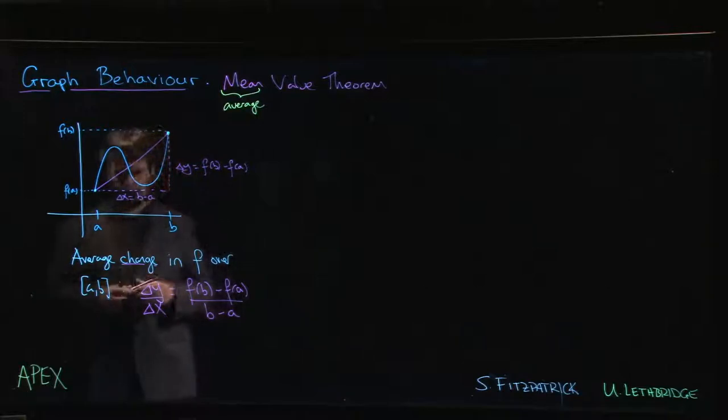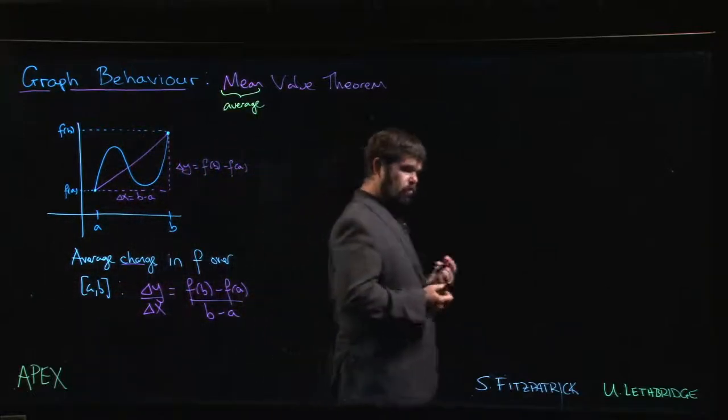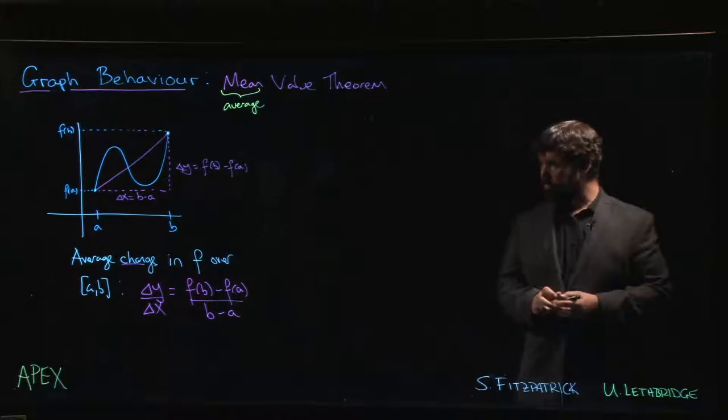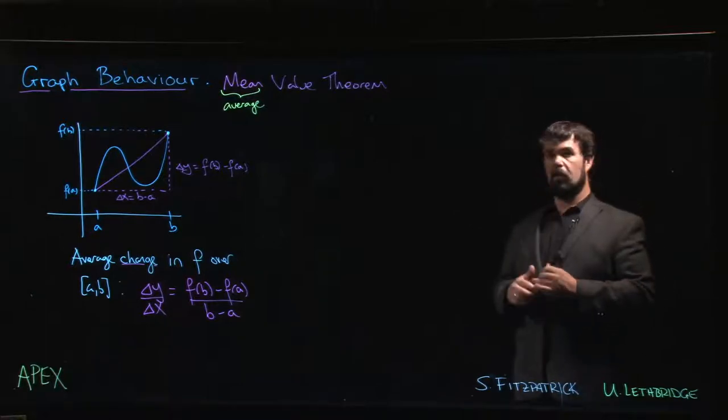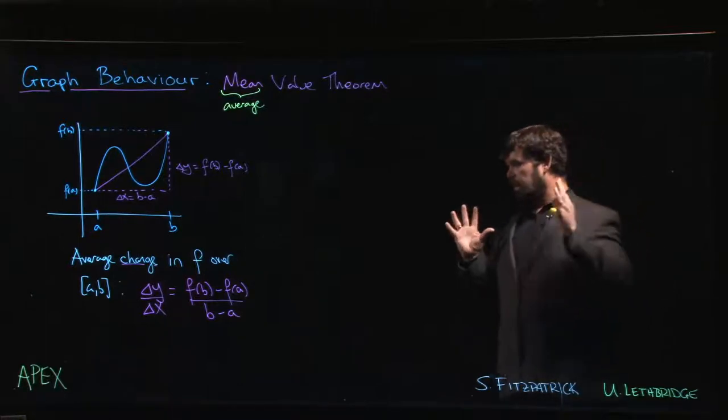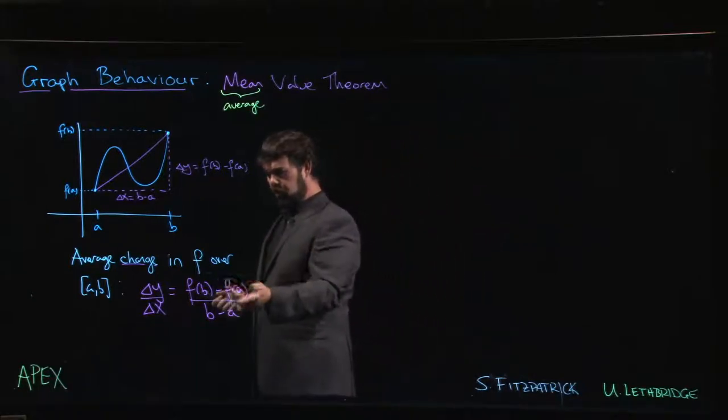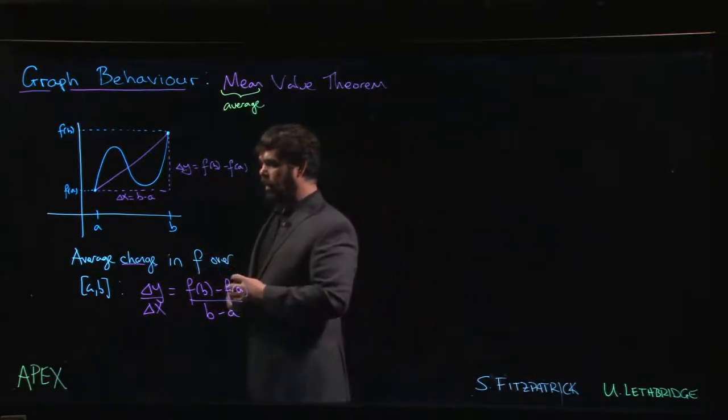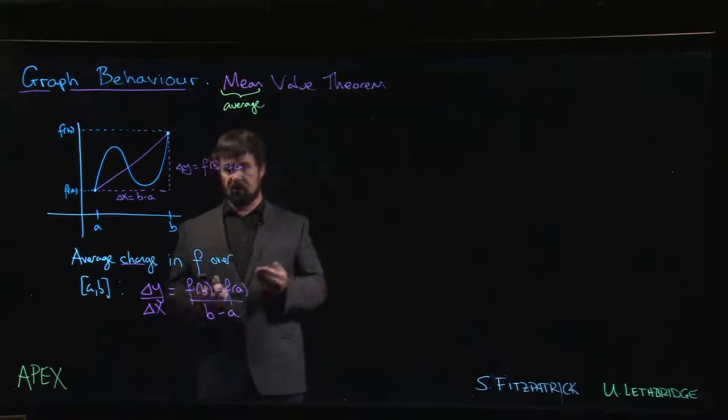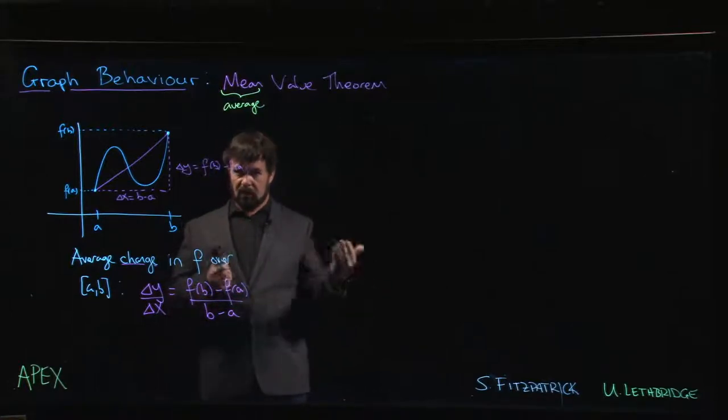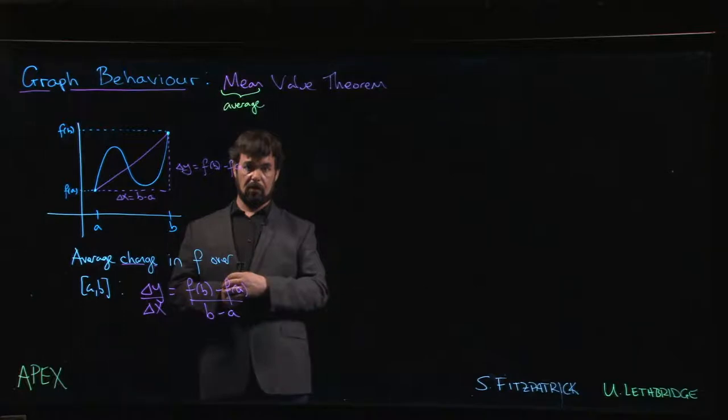What the Mean Value Theorem does is it relates the average change, which tells us about values of the function at particular points, to the instantaneous change. We know that the instantaneous change is given in terms of the derivative.